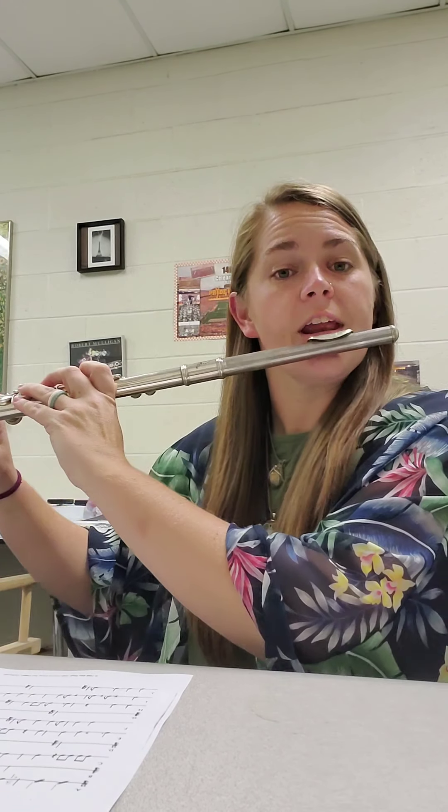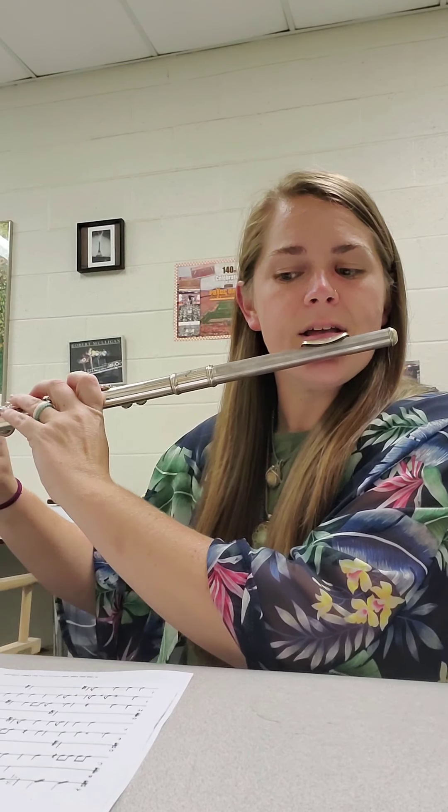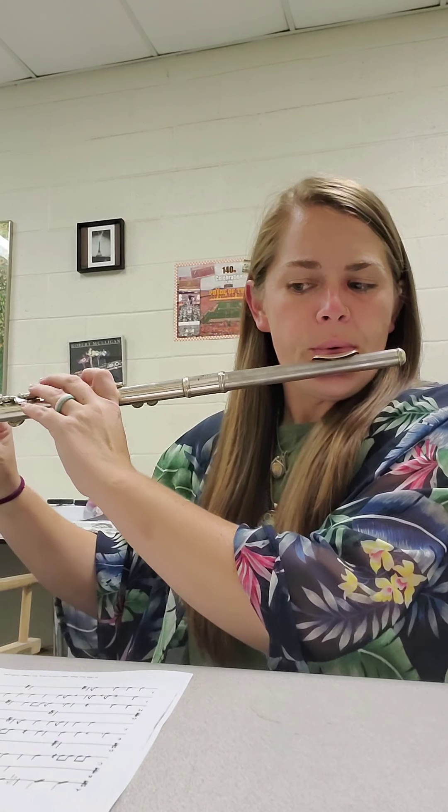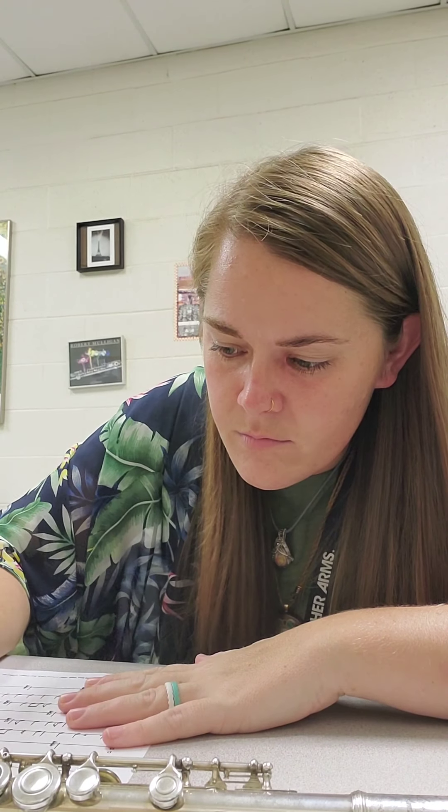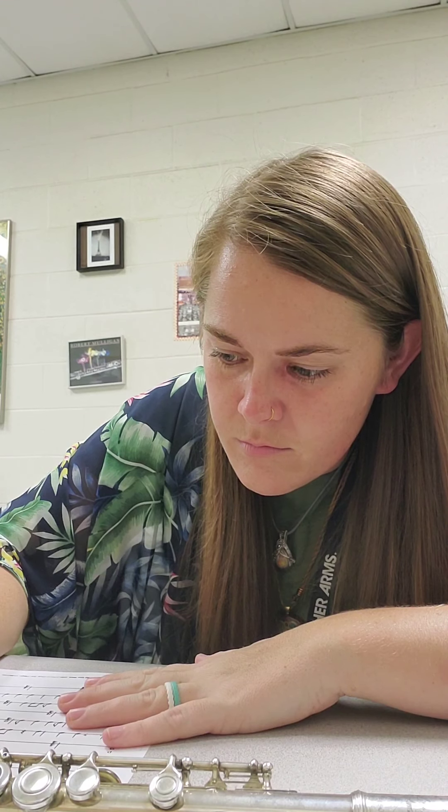Alright, so again, I'm going to play that 2-4 measure. This is measure 3 of line A. 1, 2, and 1, and. Write that down. Alright, look on to measure 4. There is no time signature, and you have a little space right there. So look at measure 4 and decide what your time signature is there and write that in.